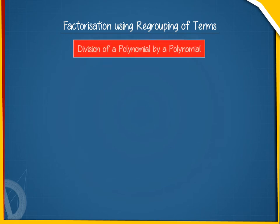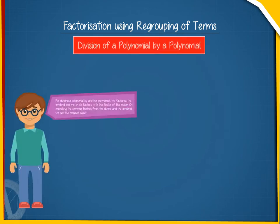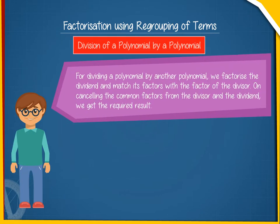Division of a polynomial by a polynomial. For dividing a polynomial by another polynomial, we factorize the dividend and match its factors with the factors of the divisor. On cancelling the common factors from the divisor and the dividend, we get the required result.